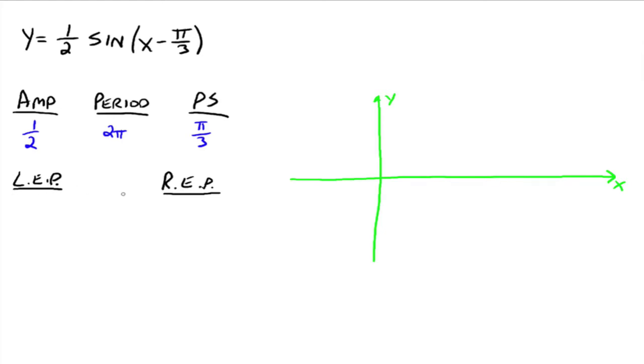Okay, so to get the left endpoint, you go x minus pi over 3, whatever you're taking the sign of here. You want that equal to 0. You solve that for x. So x equals pi over 3. That's where we're going to start. Right endpoint, x minus pi over 3 equals 2 pi. Solve that for x, and you're going to get x equals, so 2 pi plus pi over 3 would be 7 pi over 3, because it would be 6 pi over 3 plus pi over 3.